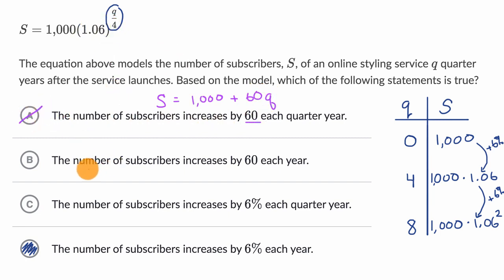So we can rule that out. The number of subscribers increases by 60 each year. Well, this would be something like S equals 1,000, our initial number of subscribers, plus q over four times 60, because then every four quarters you would increase by a year. Obviously you could simplify this, it would be 15 times q, but this is clearly not what is happening here.